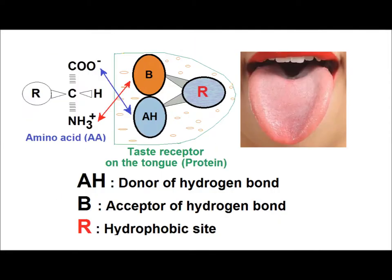Now, how could we explain at a biochemical basis the sensation of sweet and bitter taste? All these sensations are at the level of our tongue. The sweet taste receptor on our tongue shows three regions: B, AH, and R — where AH is a hydrogen bond donor, and B is an acceptor of a hydrogen bond. Hydrogen bonds could be formed between hydroxyl groups of serine and threonine and amino acids of tongue receptors.